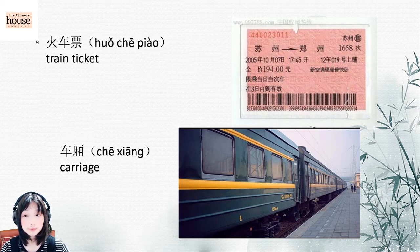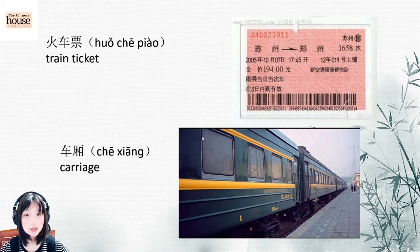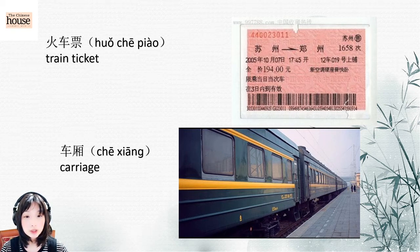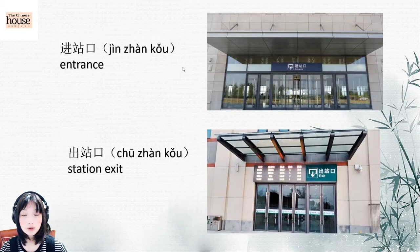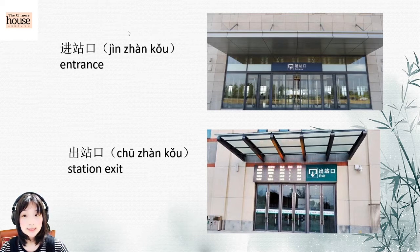And then train ticket: 火车票 (huǒchē piào) — you just add 票 (ticket) after train. 火车票. And then carriage: 车厢 (chē xiāng). 车厢. Read after me: 车厢.